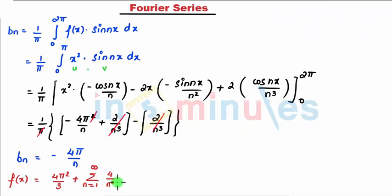plus summation n equals 1 to infinity, my bₙ is minus 4π by n sin nx. So that's my final answer. That might be a case they also sometimes